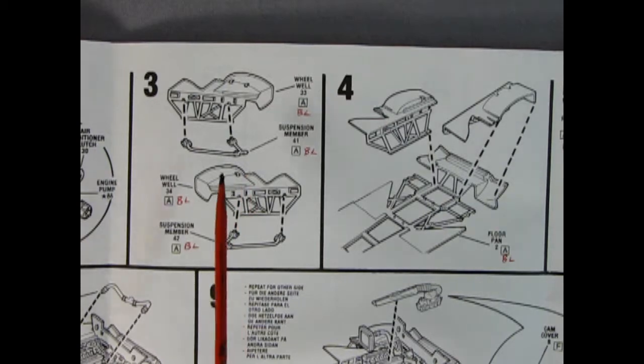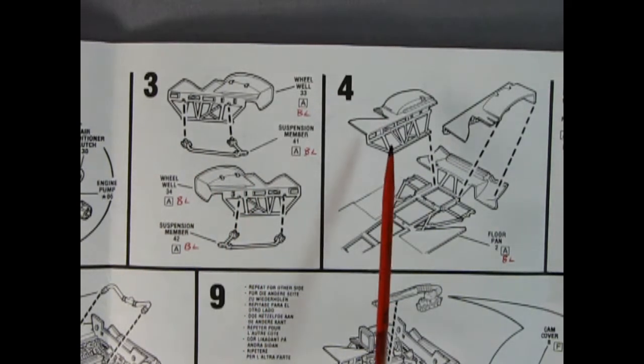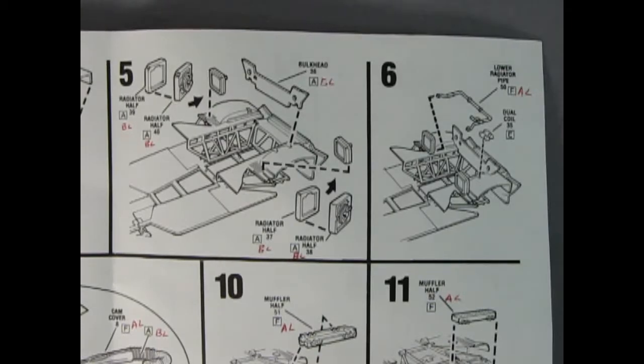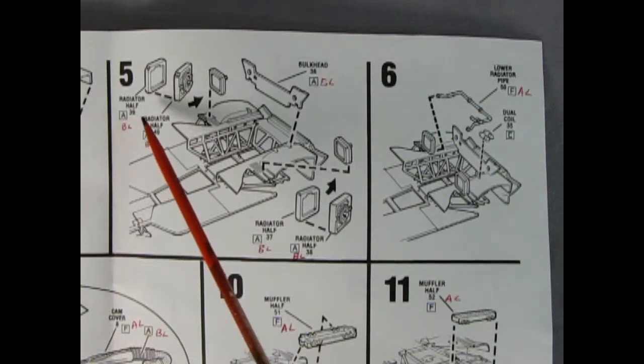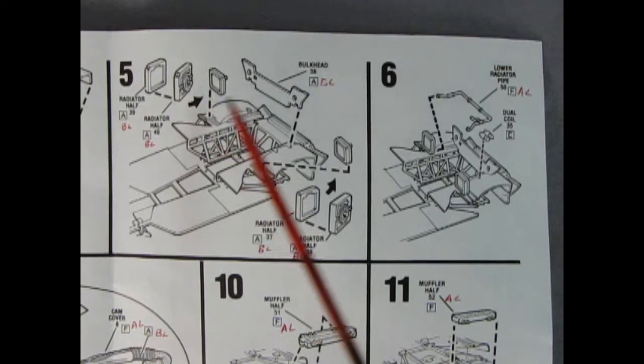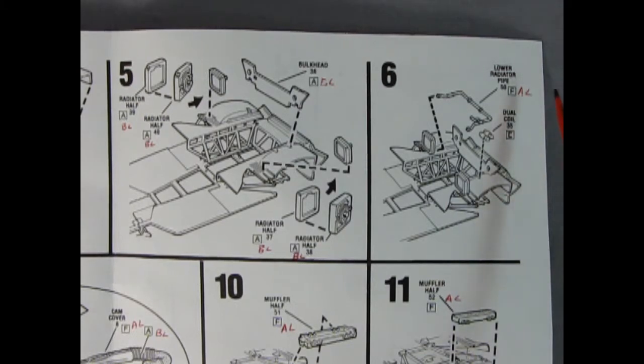Panel 3 shows our wheel wells with the suspension members being glued on and then you take both of those assemblies and you drop them right onto the floor pan. The panel 5 shows these radiators being glued together. You get an outer and inner half and then they would go right there and there and then we've got this rear bulkhead as well.